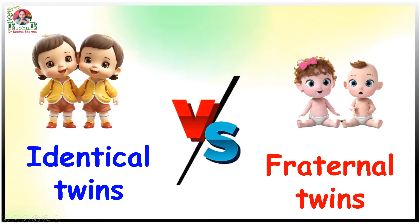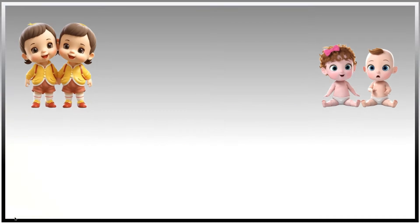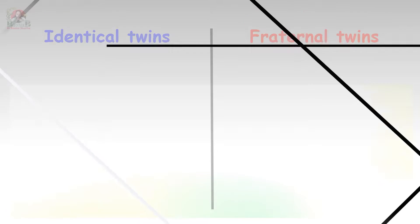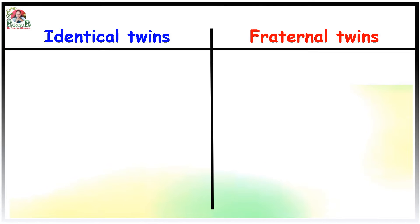Non-identical twins are also known as fraternal twins. But before making a comparative account of these two types of twins, let's define who are called twins. When two embryos develop simultaneously in the uterus of a mother and two offspring or babies are born in the same pregnancy, those babies are called twins. Now let's make a comparative account of identical and fraternal twins.